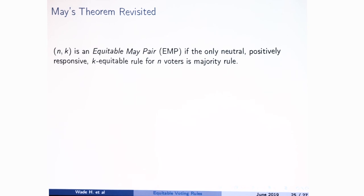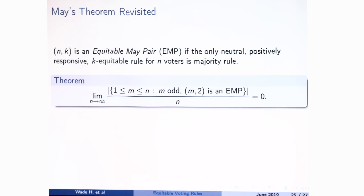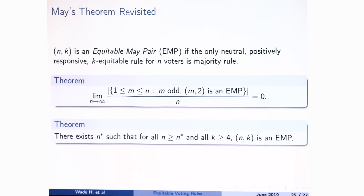We say that a pair — number of voters and k — is an equitable May pair if May's theorem holds for that pair when we ask for k-equitability instead of anonymity. Already for two-equitability, there aren't very many n for which you can find any rule other than majority rule that is two-equitable. And once your k gets to six, there's nothing you can do — you're back to May's theorem. So something special happens when you just ask for equitability; if you ask for a little more — being able to move groups of people around — then things collapse.